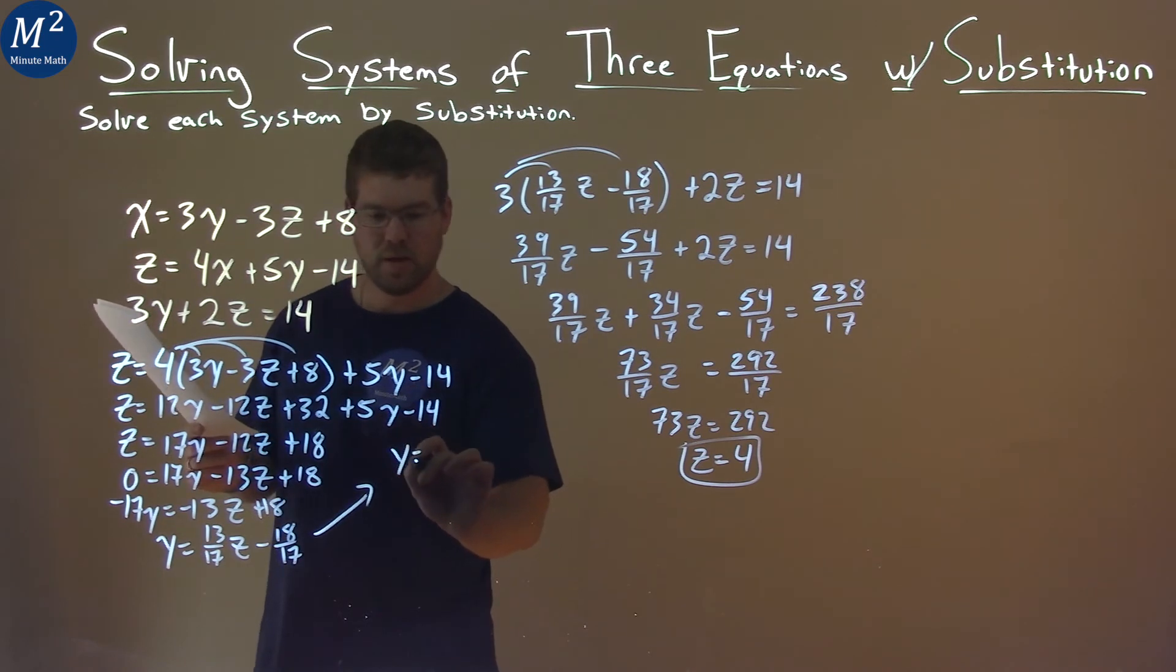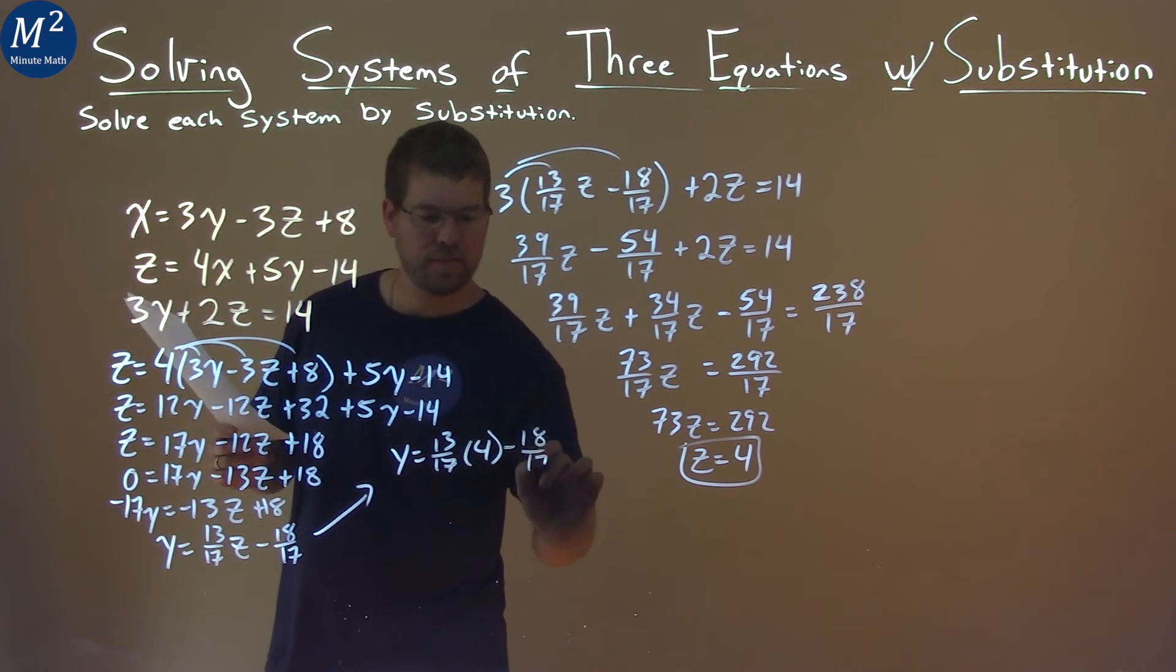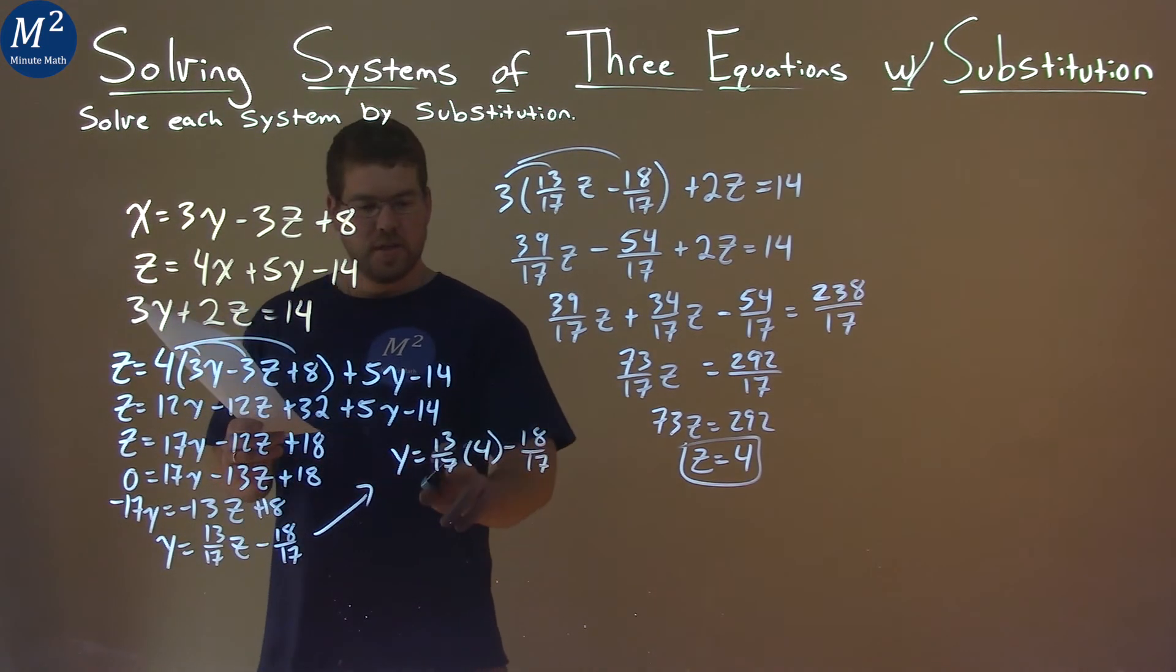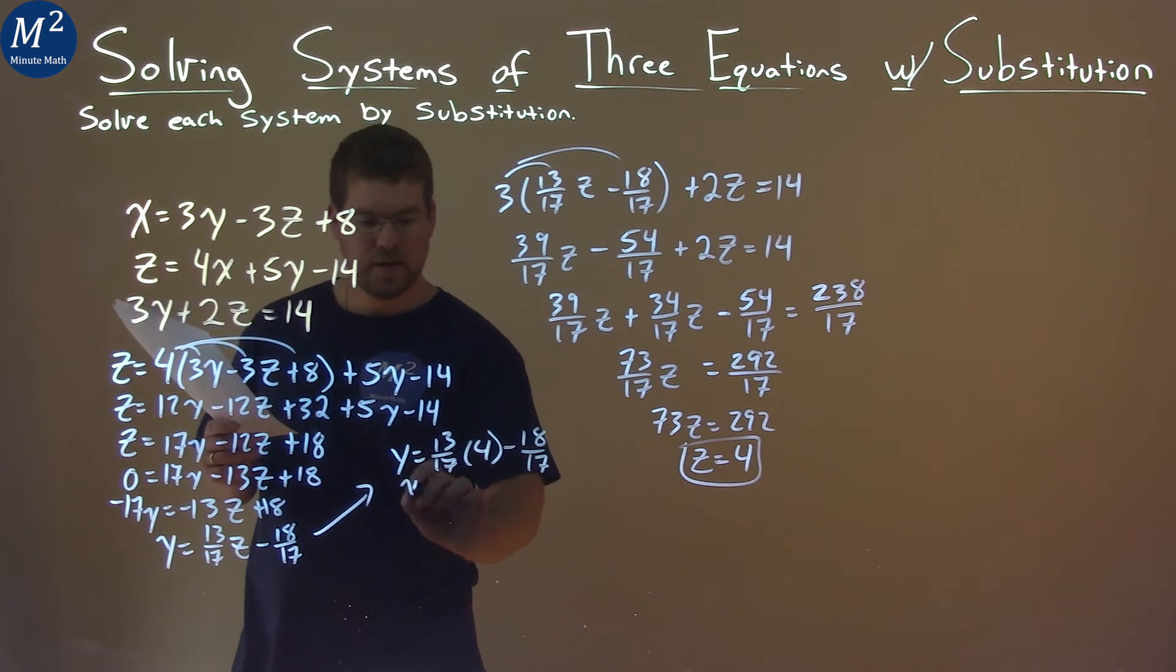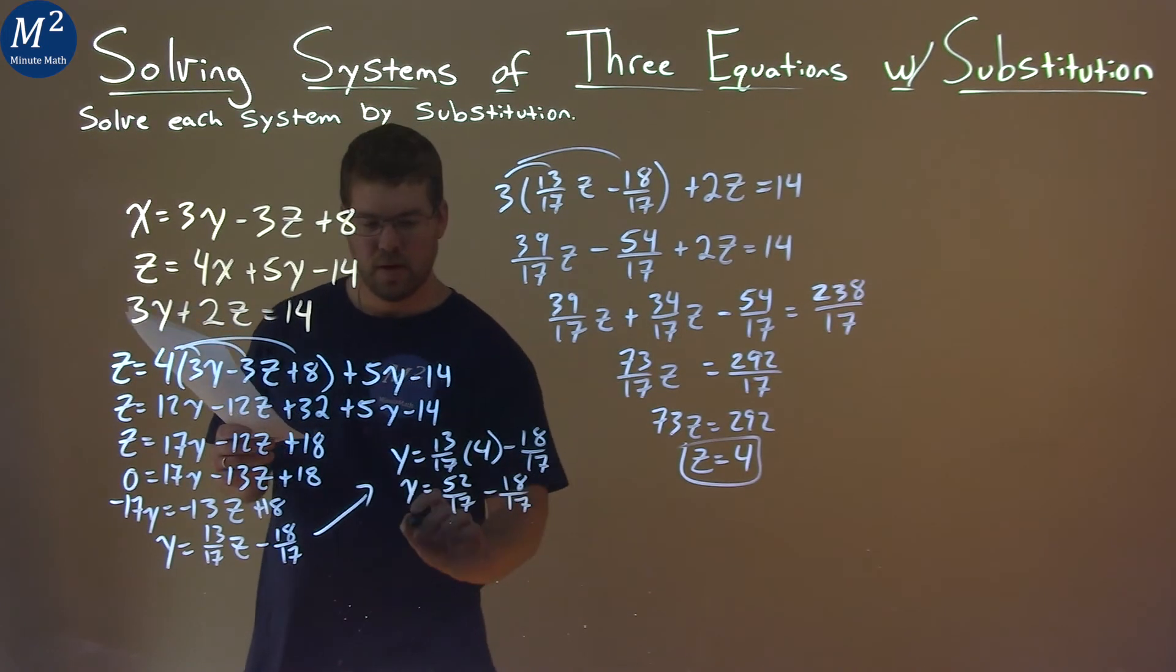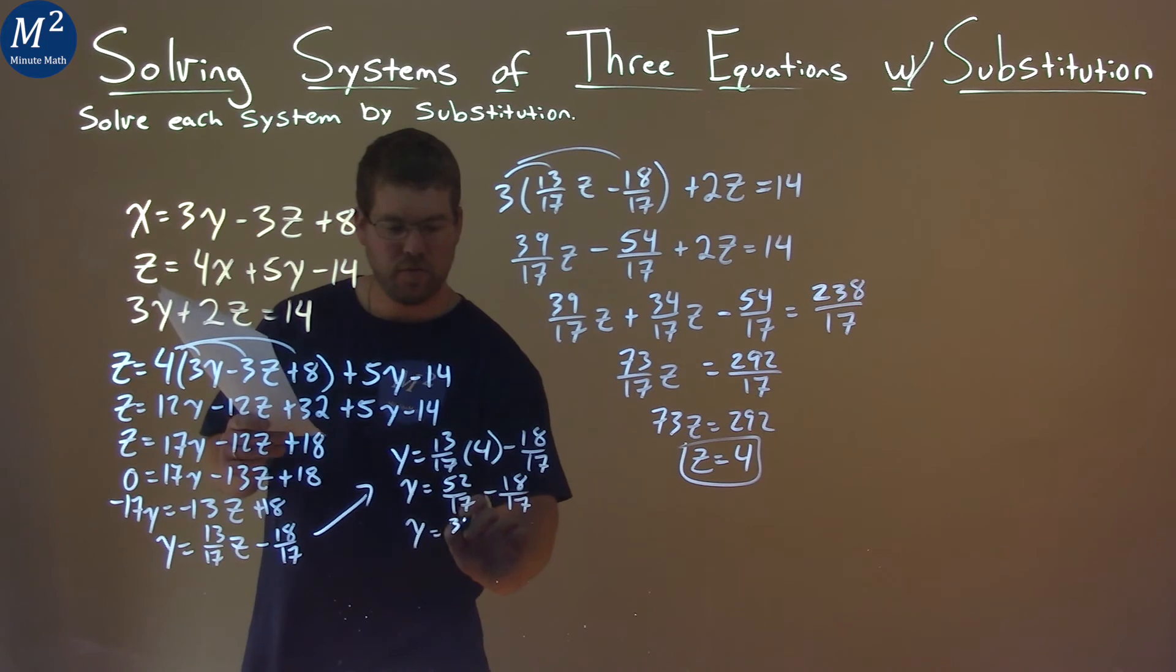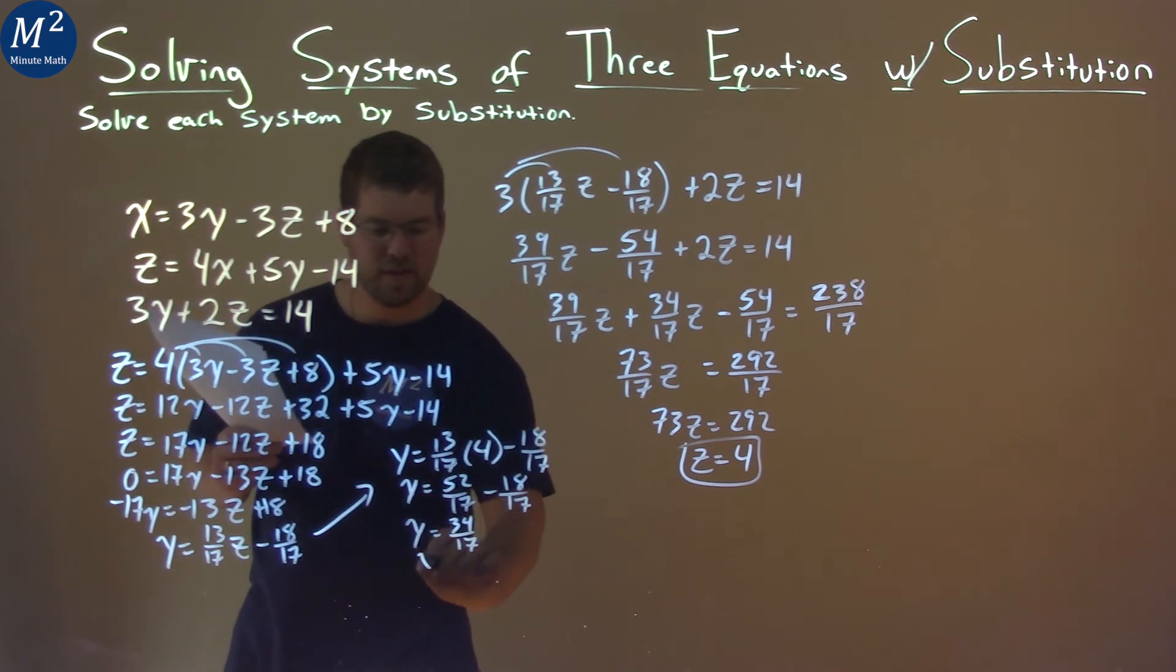So, we have y equals 13 over 17 times z, which is 4, minus 18 over 17. 13 over 17 times 4 is a 52 over 17. And we have minus 18 over 17 here. 52 over 17 minus 18 over 17 is a 34 over 17. And 34 over 17 is equal to 2.